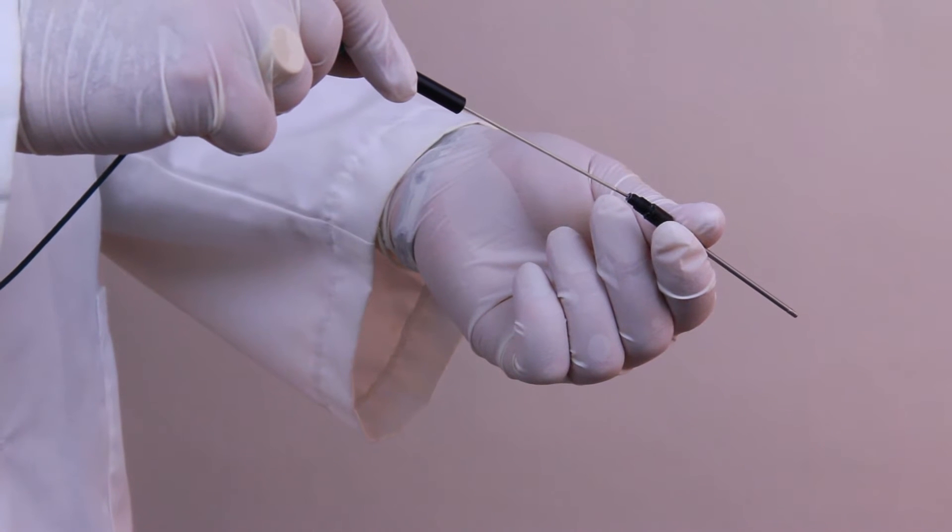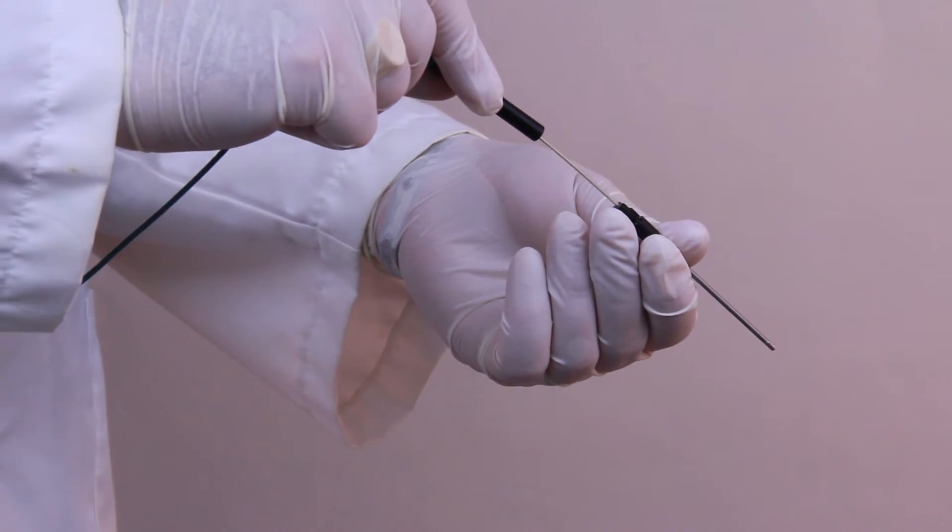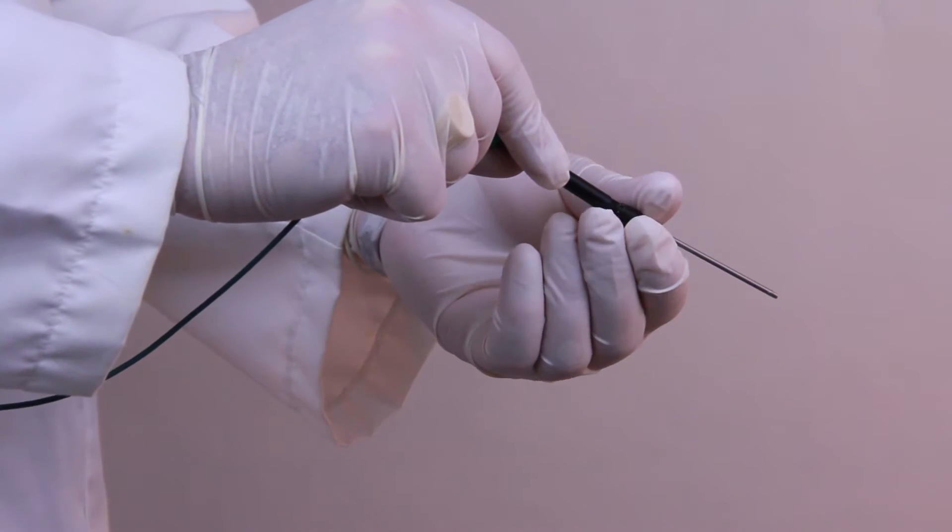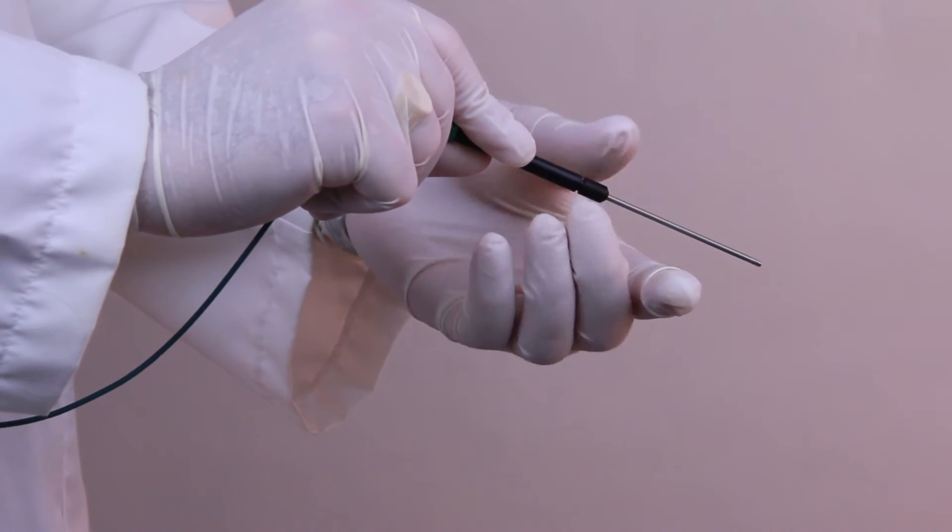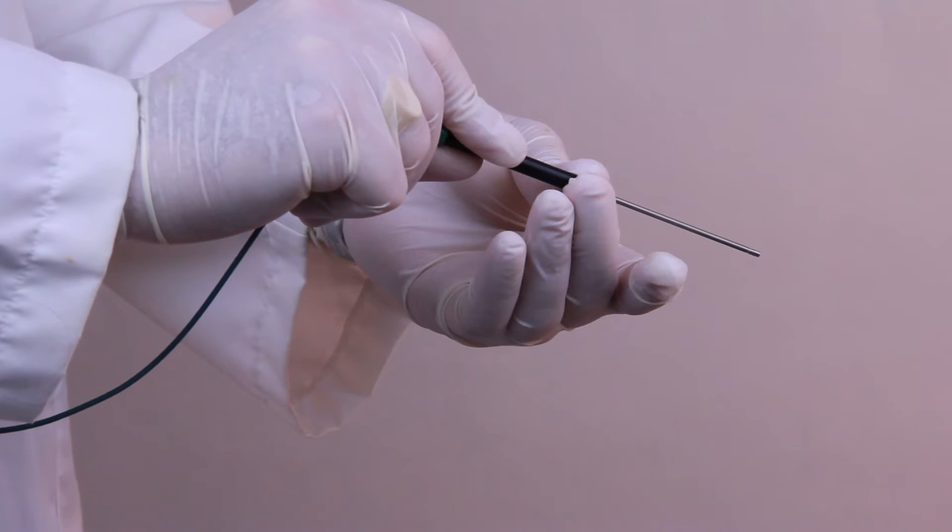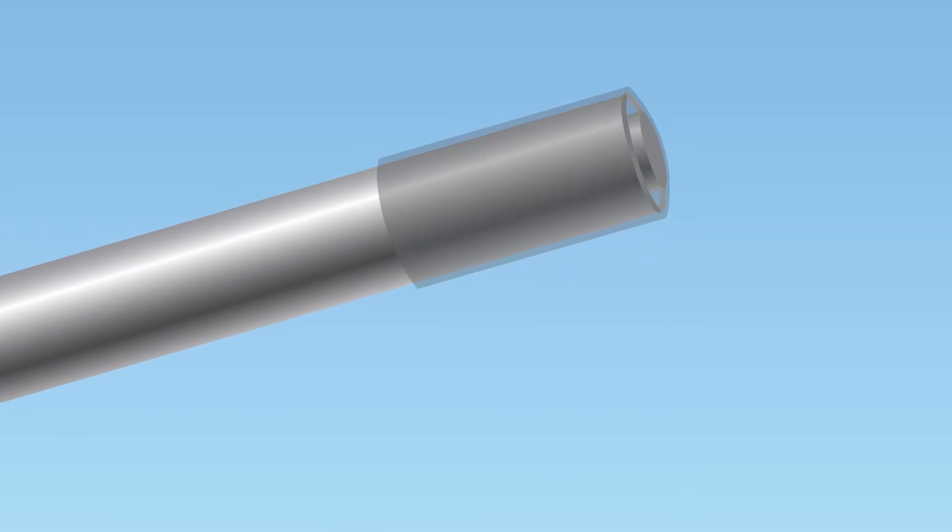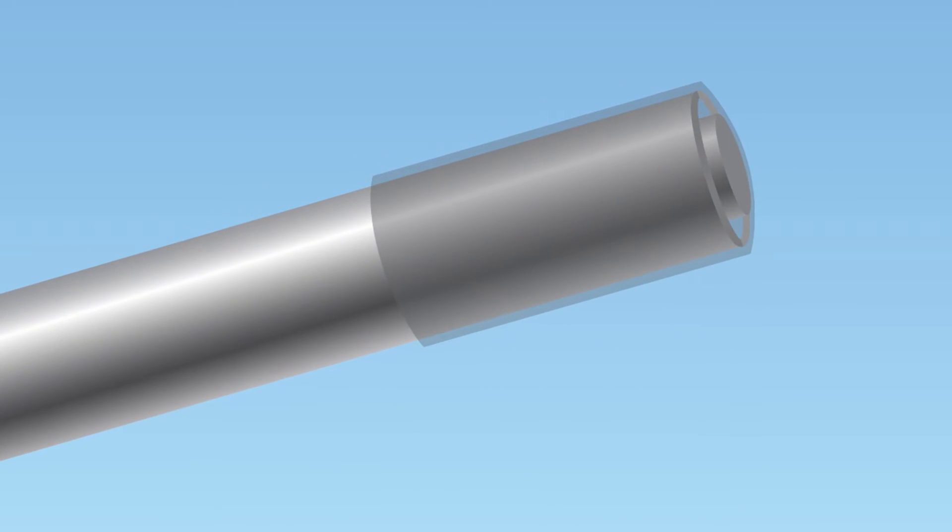Insert the sensor into the sleeve. Some electrolyte will spill out during this step. Tighten the locking cap to the sensor. The tip of the sensor will just slightly push on the membrane.